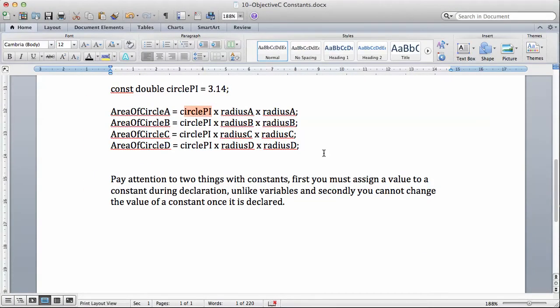The second thing you have to pay attention to is that, unlike variables, you cannot change the value of a constant once it is declared. Once I've declared const double circle pi equals 3.142, I cannot say circle pi equals 4 point something. Unlike variables where you can change the value of the variable, you cannot change the value of a constant once it is declared—you have to use that constant throughout your program or discard it.